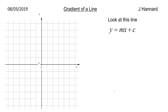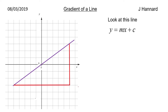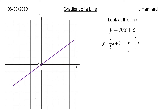Have a look at this line, y equals mx plus c. What is the gradient? Well, we can count down squares — 6 down and 10 across — so changing y over changing x, that's 6 over 10, giving a gradient of 3 fifths. We also know the intercept is 0, so we can write the equation as y equals 3 fifths of x.